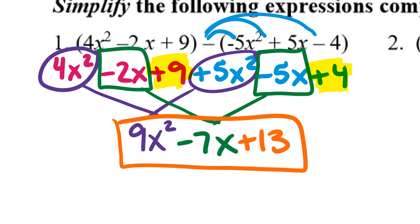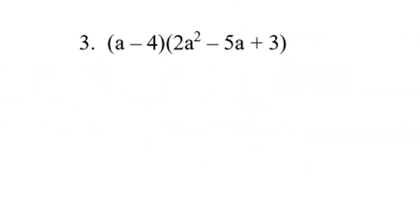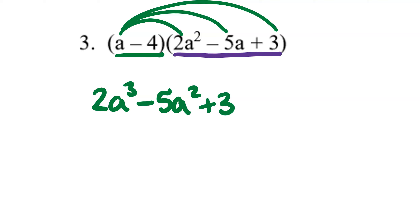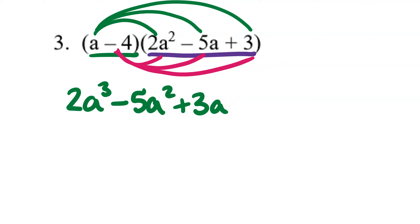Number three has no plus or minus sign between the two parentheses, so this is a multiplication problem. If you had two binomials you would just double distribute, but this is a binomial times a trinomial, so you're going to distribute each term in the binomial across the trinomial. Starting with 'a': a × 2a² = 2a³, a × (-5a) = -5a², and a × 3 = 3a. Now distribute the -4: -4 × 2a² = -8a².